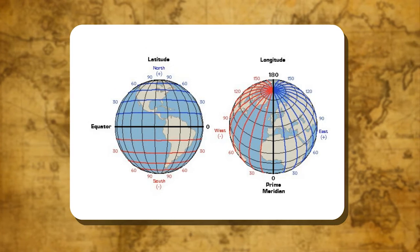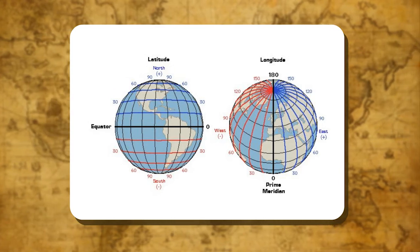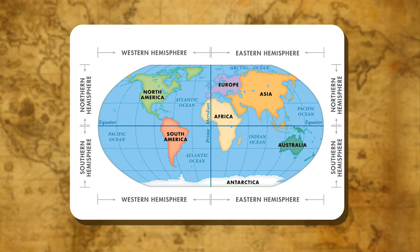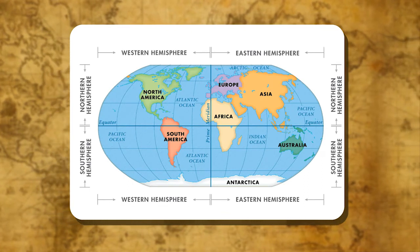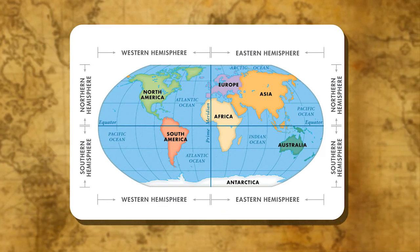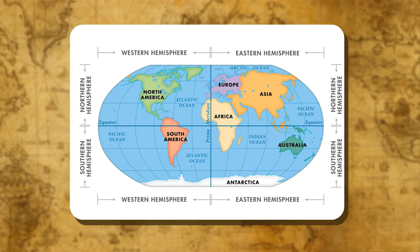Thus, in total, there are 180 parallels of latitude. It is necessary to mark each latitude as N (north) in the northern hemisphere and S (south) in the southern hemisphere.